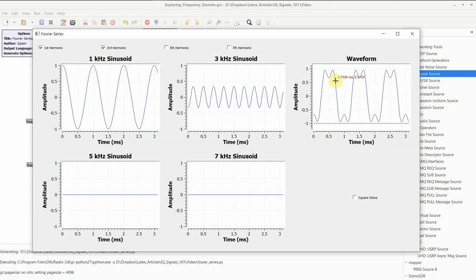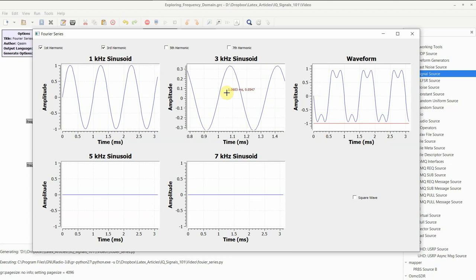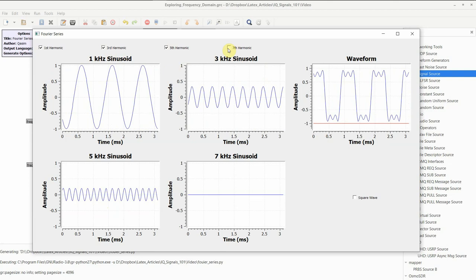5 kilohertz with amplitude of 1/5 and 7 kilohertz with an amplitude of 1/7 are added. You can see this waveform resembles something we know very well, that is a square wave.